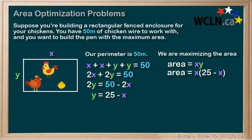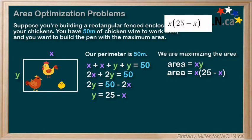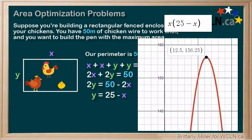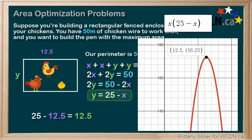Lucky for us, this is a quadratic. So Step 5: let's graph. We plug x times (25 minus x) into Desmos and find that we have a maximum at x equals 12.5. Then to figure out what y is, we use 25 minus x again to find that y is also 12.5 meters. So our pen with the maximum area in this case is a square.